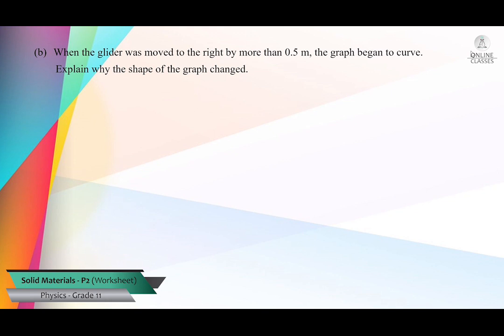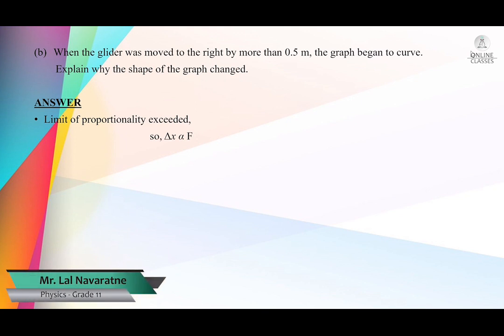Part B: when the glider was moved to the right by more than 0.5 meters, the graph began to curve. Explain why the shape of the graph changes. If the graph curves, it means the cord no longer obeys Hooke's law — the limit of proportionality has been exceeded. Extension is no longer proportional to applied force, so Hooke's law no longer applies. That is why the straight line part becomes curved.